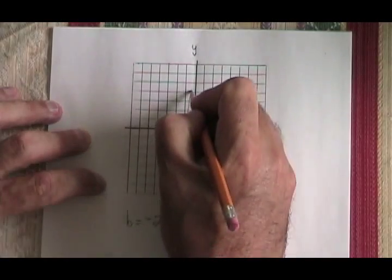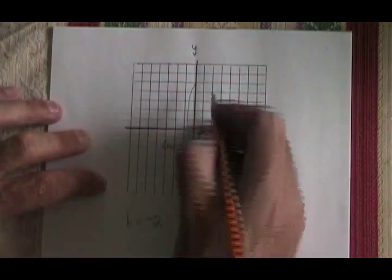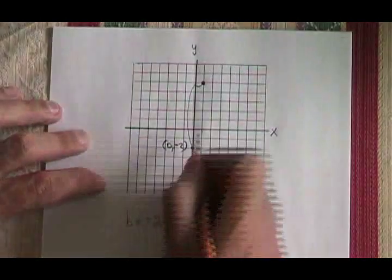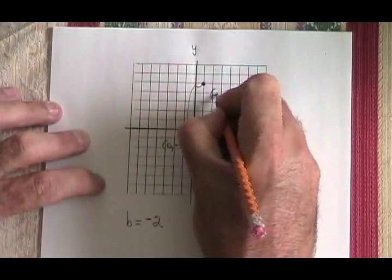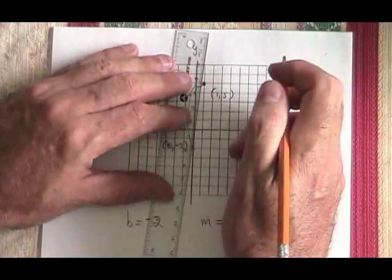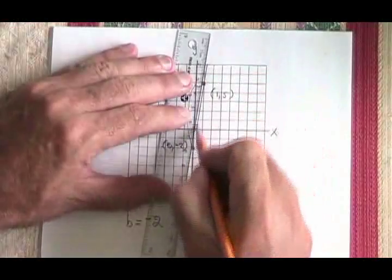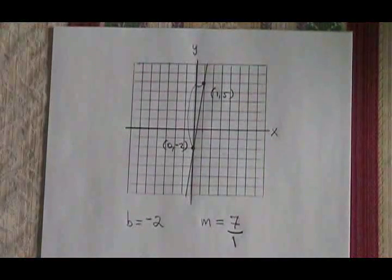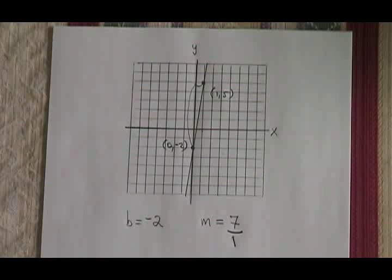Rising 7 means going up to here. And a run of 1 means I go over to here. Here's my second point. It has the coordinates 1, 5. And all that's left to do is draw my line with the ruler. And I'm finished. I have graphed the line. This is how you use the trick of rise over run.